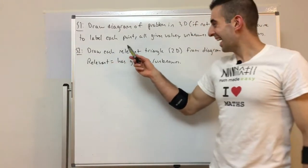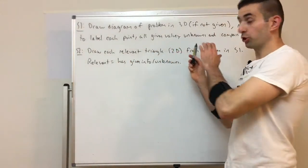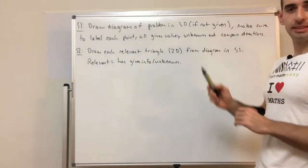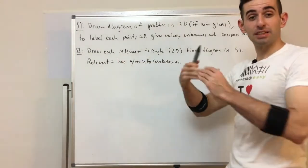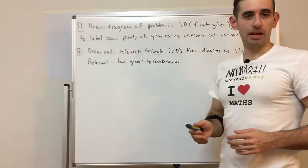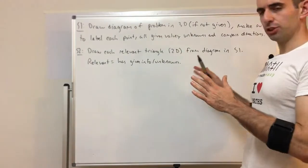Which is, so draw each relevant triangle, the 2D version from your diagram in step 1, and relevant means that has given info or unknown value you need to find.